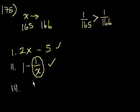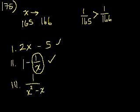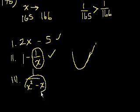Statement 3: 1 over x squared minus x. What happens to x squared minus x as we go from 165 to 166? We are well beyond any vertex. x squared minus x is a parabola. Its vertex is at 2x minus 1 equals 0, so x equals 1/2. So we're in the part of the curve that's increasing upwards. When we go from 165 to 166, this denominator is definitely going to increase.